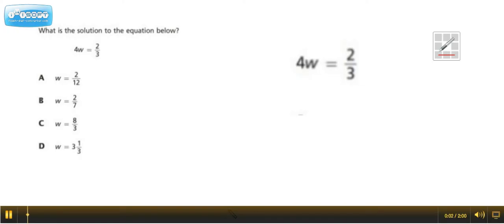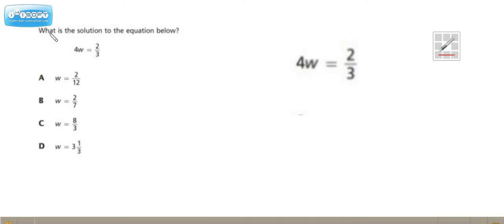Hey everybody, Ms. Dietrich here. We're taking a look at a question that's a little tricky. What is the solution to the equation below? 4 times w equals 2 thirds. And they give us 4 choices.